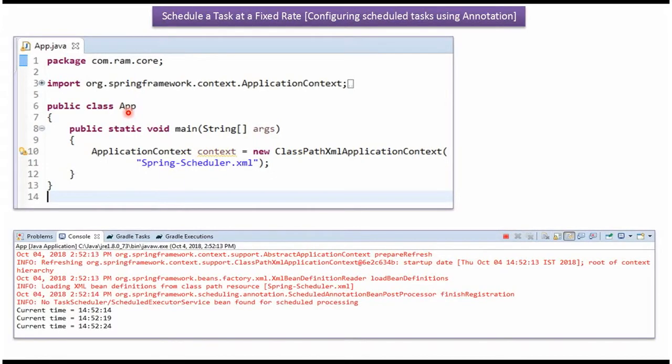Here I have defined the class App. Here I have created application context object by reading the Spring configuration file.